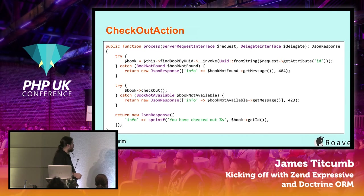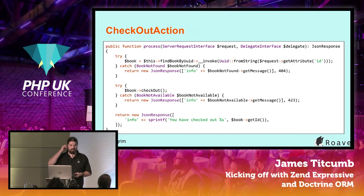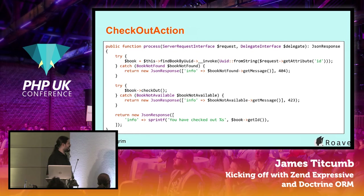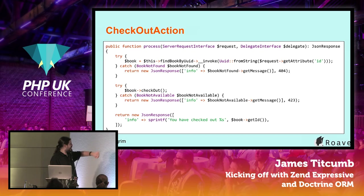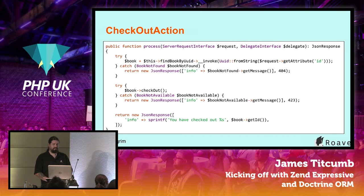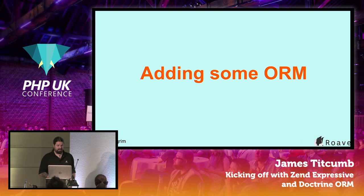The action implements the middleware interface — we've got the request, the delegate, and it returns a response, in this case a JSON response. Most of this is just try-catching and returning helpful error messages. The main meat of this function is invoking the find-book-by-UUID, checking it out if we can, and returning a useful response if something goes wrong. The check-in action is essentially the same.